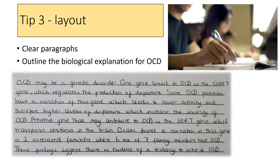Layout of your paragraphs is so important. If we look at this AO1 question — outline the biological explanation of OCD — you can see this student has answered their question and linked everything about genetics into one paragraph. They've talked about the COMT gene and the SERT gene, and the information in there is really, really good, all contained in that one paragraph. If they were writing an extended 16-mark answer, I would suggest leaving a blank line underneath and then starting the neural explanation in the next paragraph. This keeps everything nicely laid out, clear, and organized for both yourself and the moderator marking your answer.